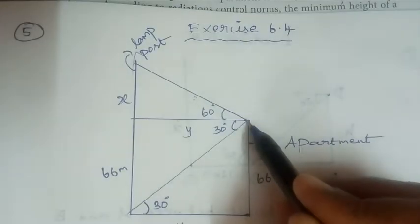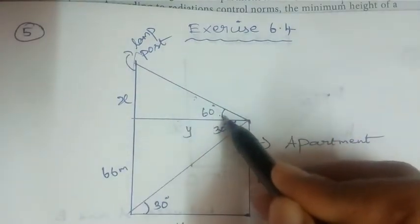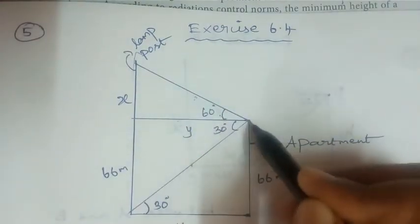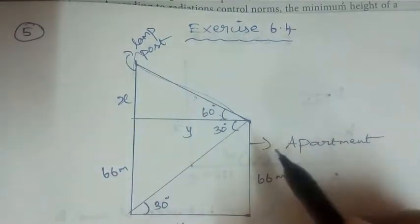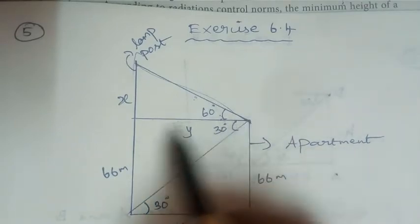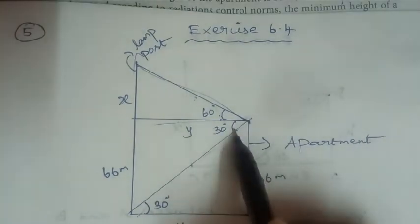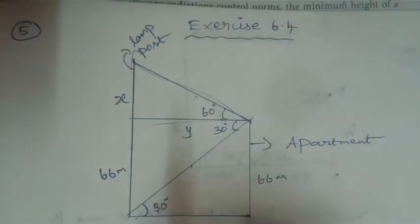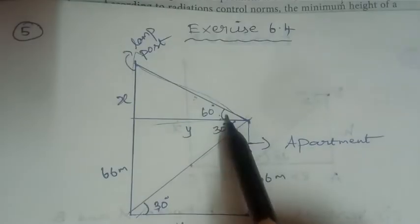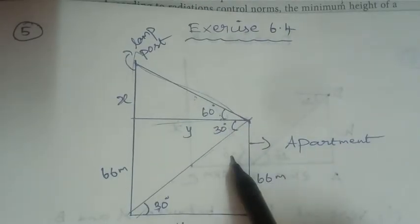From the top of the apartment, the angle of elevation to the top of the lamppost is 60 degrees — so here is 60 degrees. That is the elevation. The angle of depression to the bottom is 30 degrees — so here is 30 degrees, and here is 30 degrees for the apartment side as well.